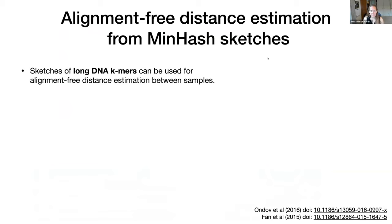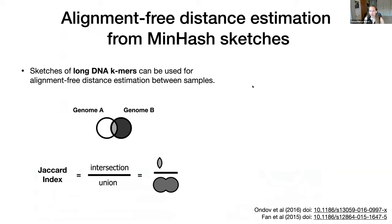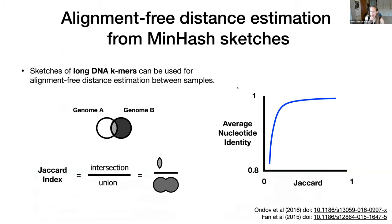Long DNA k-mer sketches can be used for distance estimation between samples. So if we have genome A and genome B, we can compute the Jaccard index — the intersection over the union of those sketches. As was published in 2015–2016, the Jaccard has a relationship to average nucleotide identity, so we can get an estimate there.